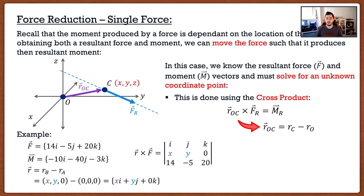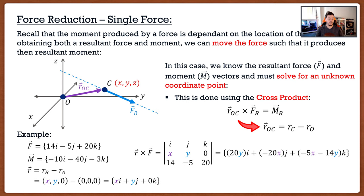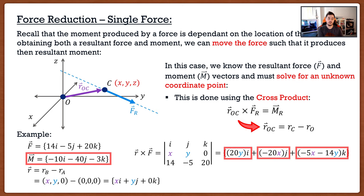Carrying out the position vector formula: I take the coordinate point of the unknown (x, y, 0) and subtract the starting point (the origin, 0, 0, 0), giving me a position vector of xi + yj + 0k. So I'm carrying out the problem as if I already have the initial variables — I just leave the unknowns as unknowns. Now I move on to the cross product. The moment created equals my position vector crossed with my force vector. I carry it out as normal, substituting x, y, and 0 for the position vector components.